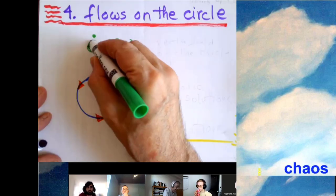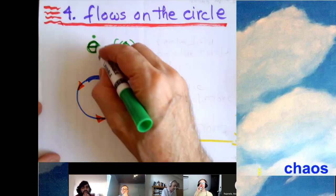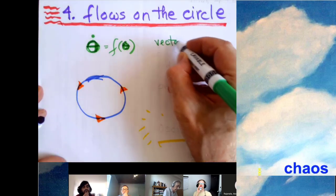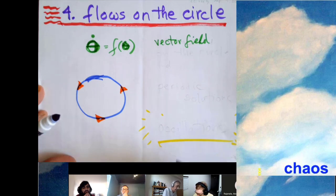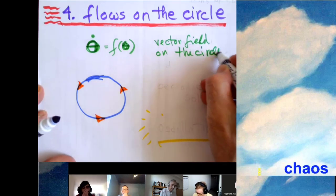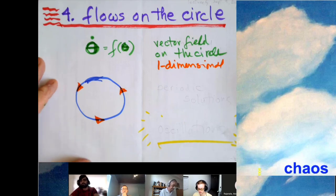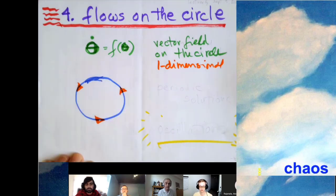We write an equation, little theta dot. There is some law that says the change of theta in time is given by a velocity field. So that is a vector field. Problem is one-dimensional, so vector field is one-dimensional as well. But now it's defined on the circle. And it's still one dimension.